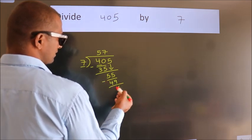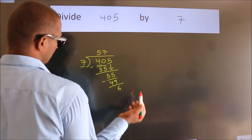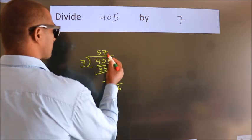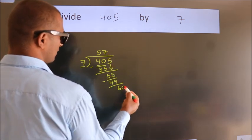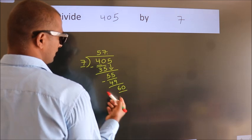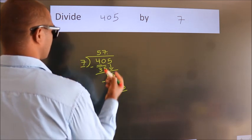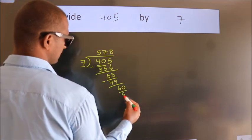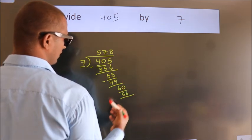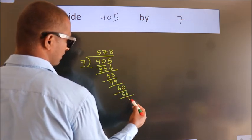After this, no more numbers to bring it down. So what we do is, we put a dot and take 0. So 60. A number close to 60 in the 7 table is 7 eights, 56. Now we subtract, we get 4.